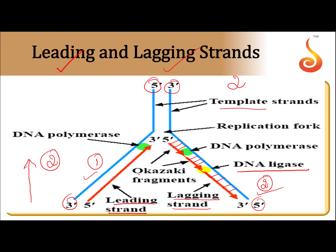In the leading strand, DNA replication occurs in the upward direction, and replication occurs very fast. In the lagging strand, DNA replication occurs in the downward direction, and replication occurs very slow. Okazaki fragments are absent in the leading strand but present in the lagging strand.